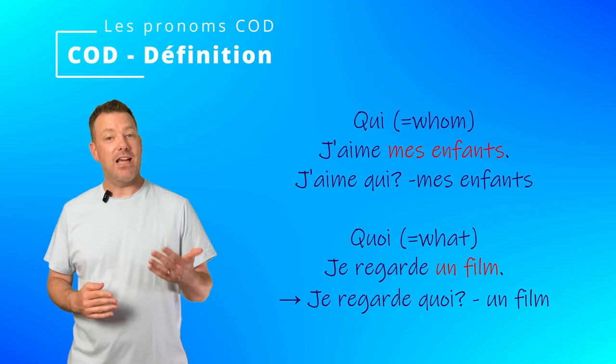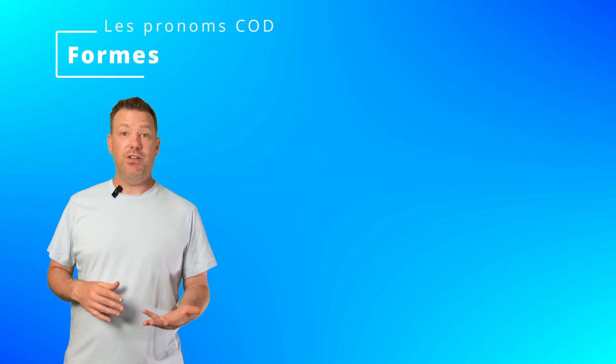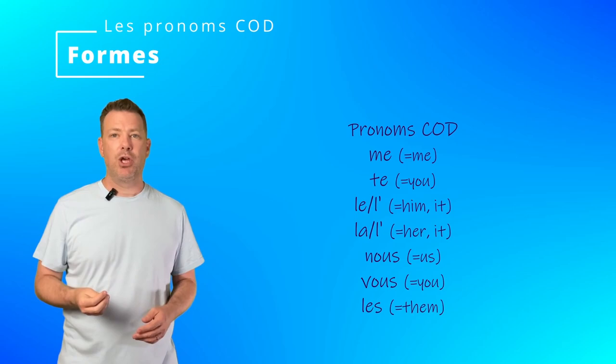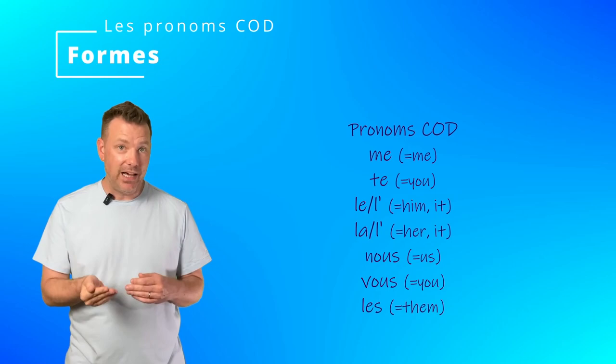So, C-O-D pronouns will come into the picture to replace a C-O-D already mentioned. Here is their form along with the translations: me, te, le, la, l'apostrophe — which is the elision of both le and la — nous, vous, and les.